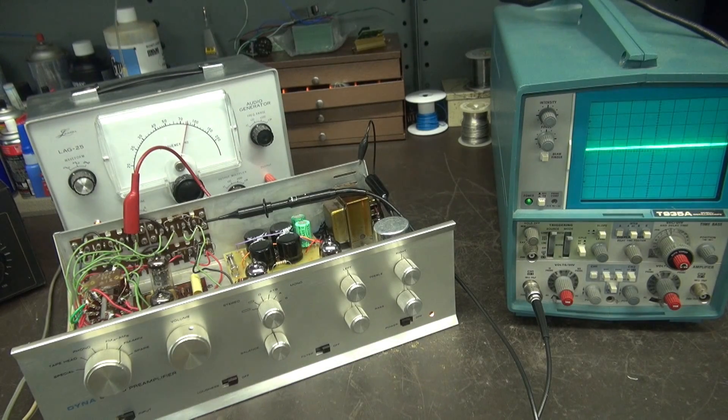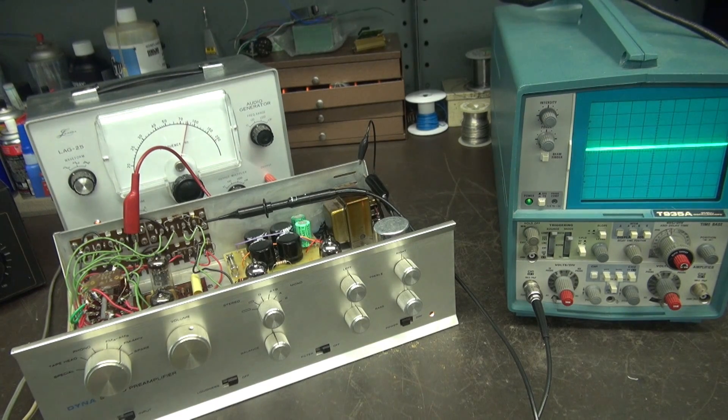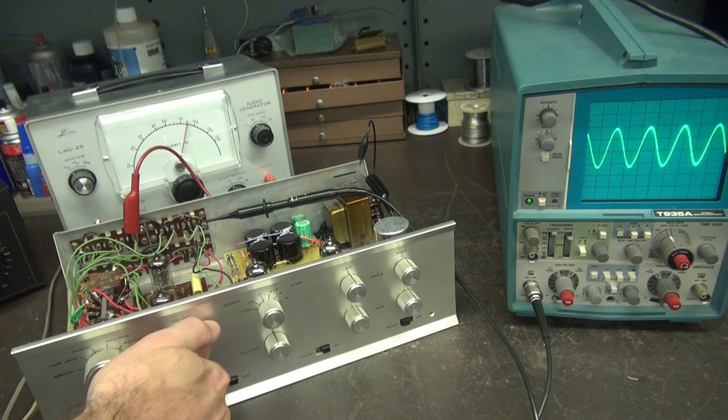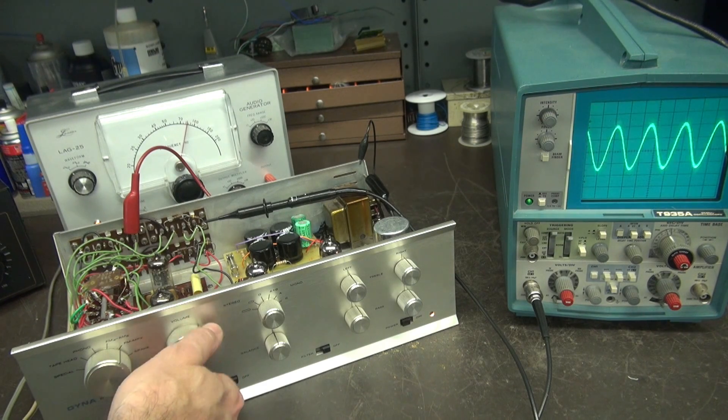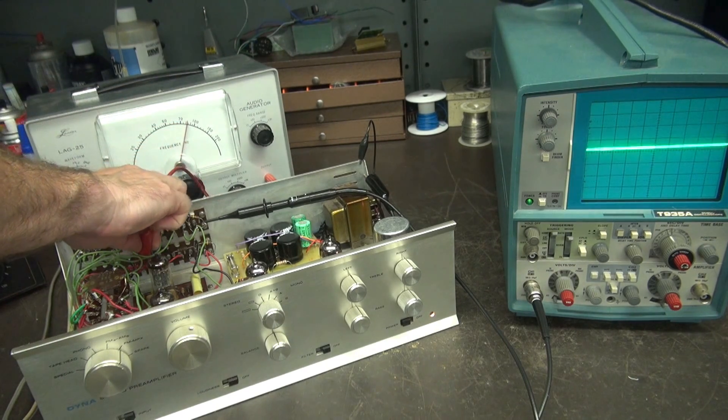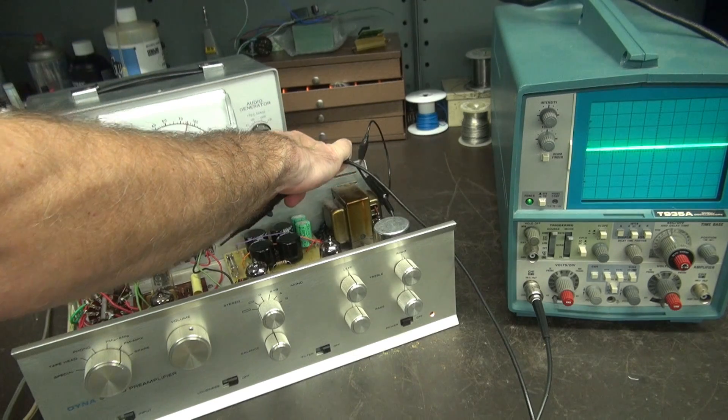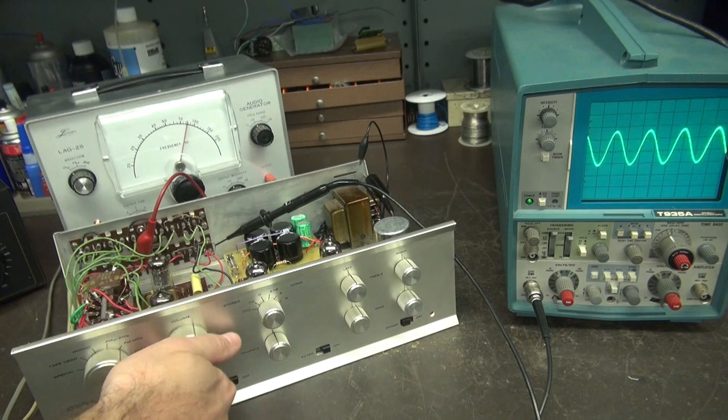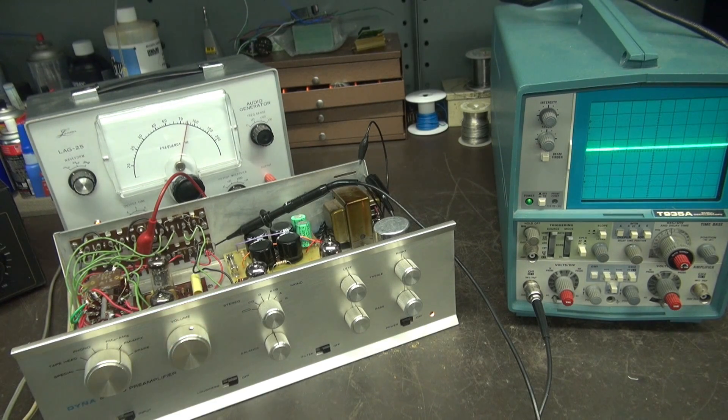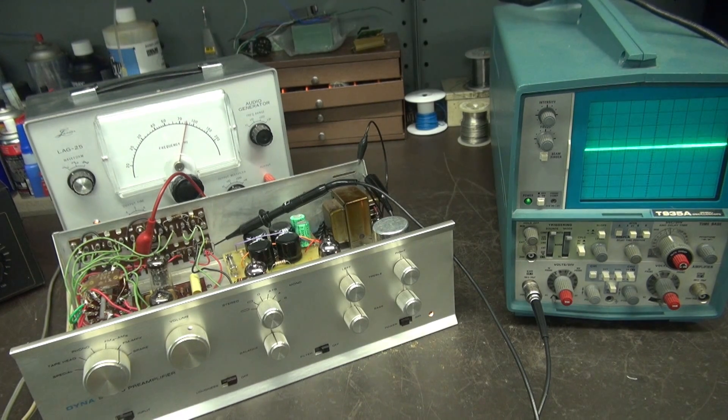All right, it's powered up. I'm looking at the FM-MPX input. There's the scope. So here's one channel. Excellent. I'm using my audio generator as an input. So let's check the other side. Since it's supposed to be stereo, right? And we got it there too. Good sign. So we have life and signal going through the Dynaco PAS.